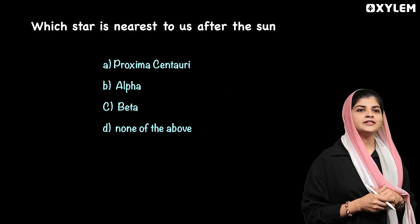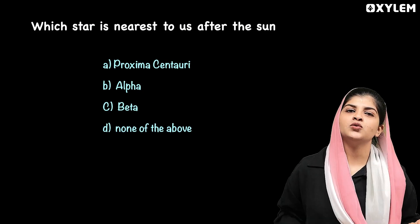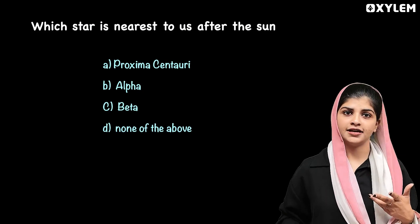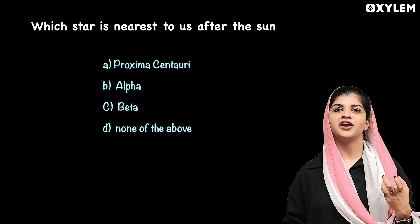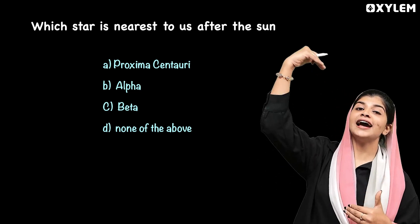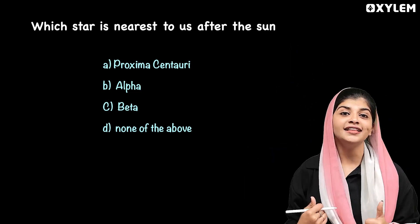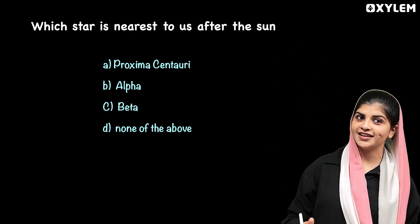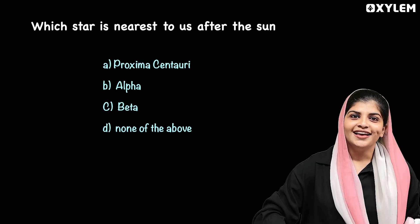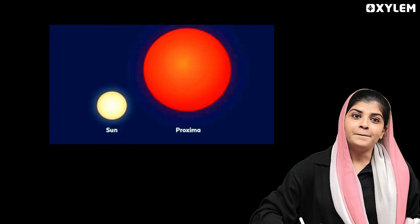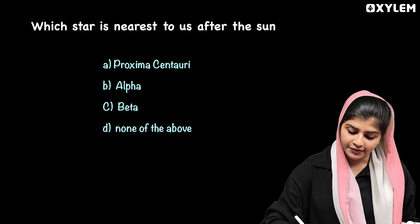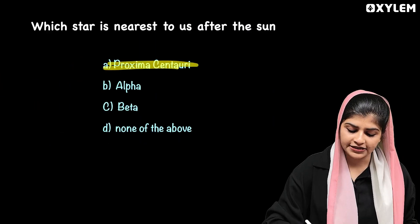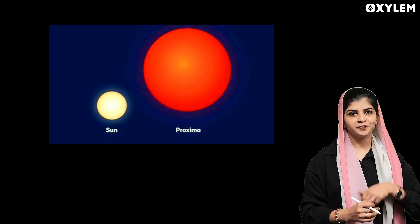The next question is: which star is nearest to us after the sun? The answer is Proxima Centauri. Option A is the correct answer.